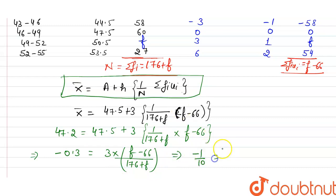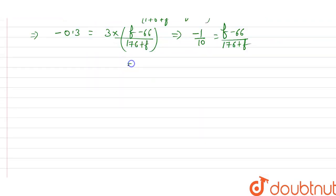And from here: -(176 + f) = 10(f - 66), which gives 484 = 11f, and from here value of f is equal to 44.